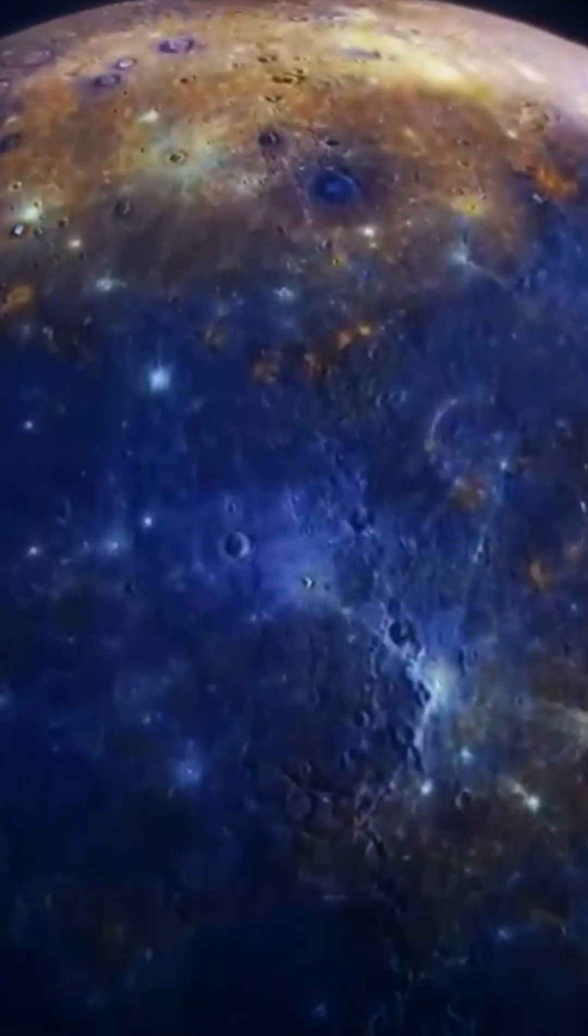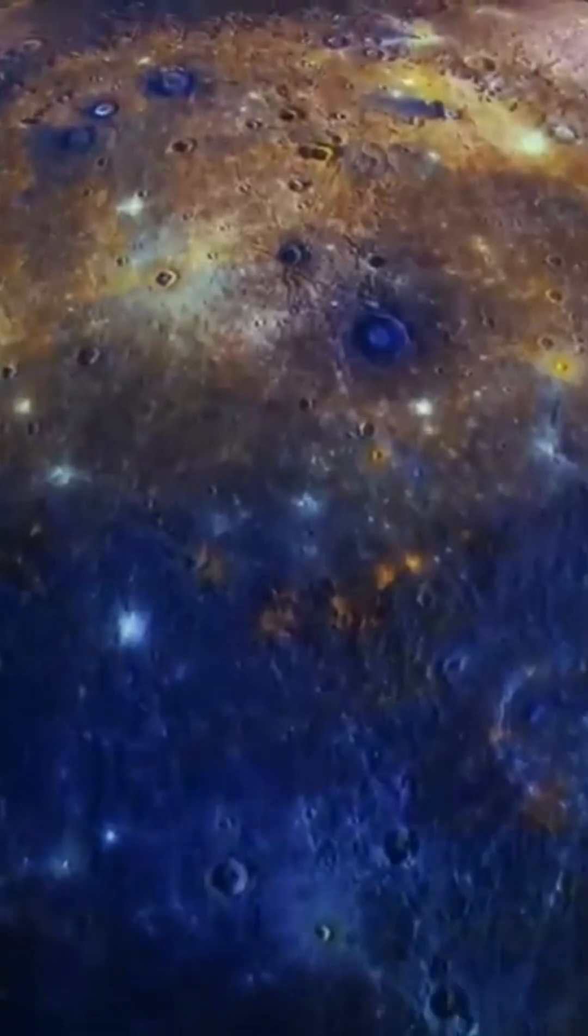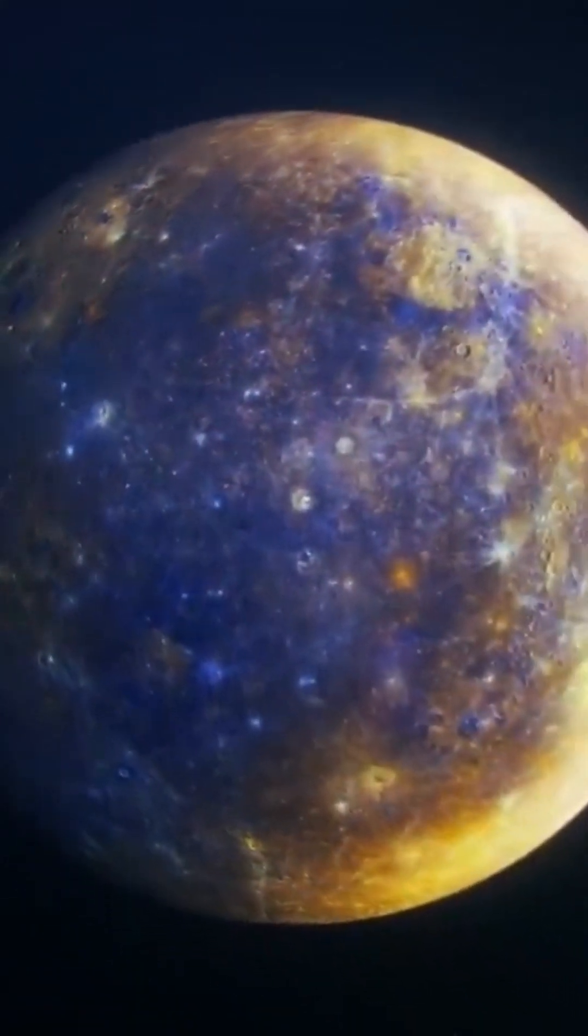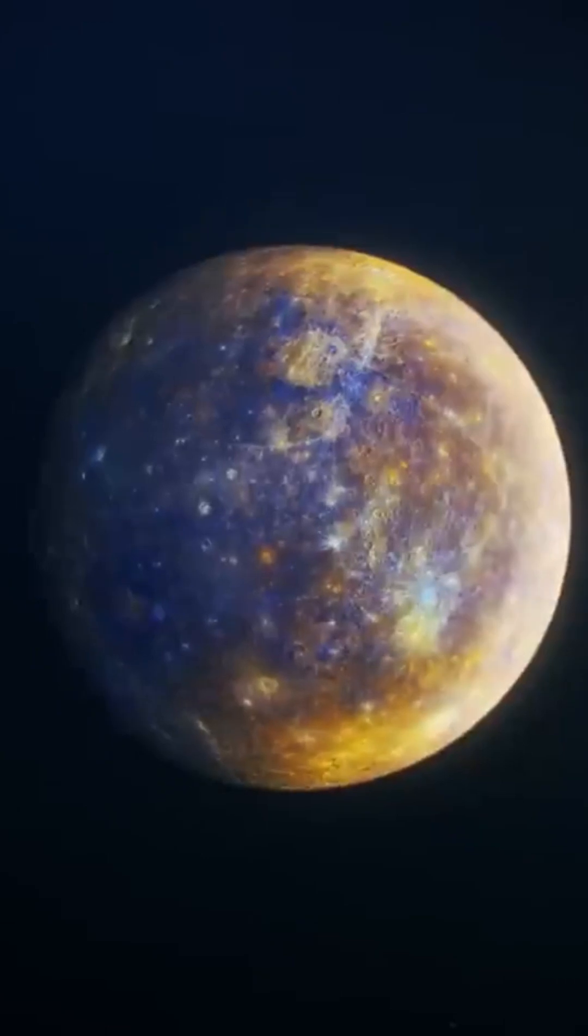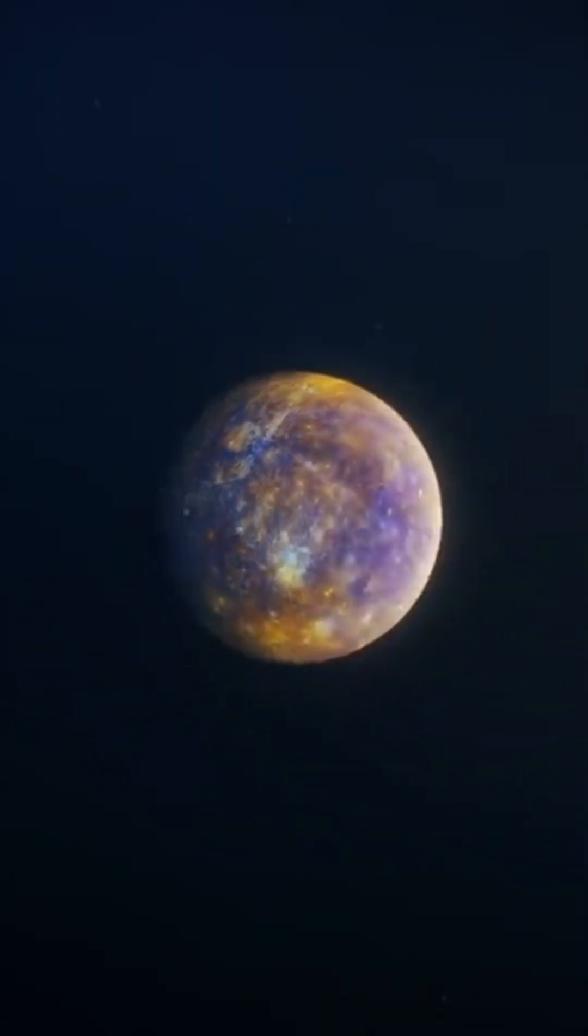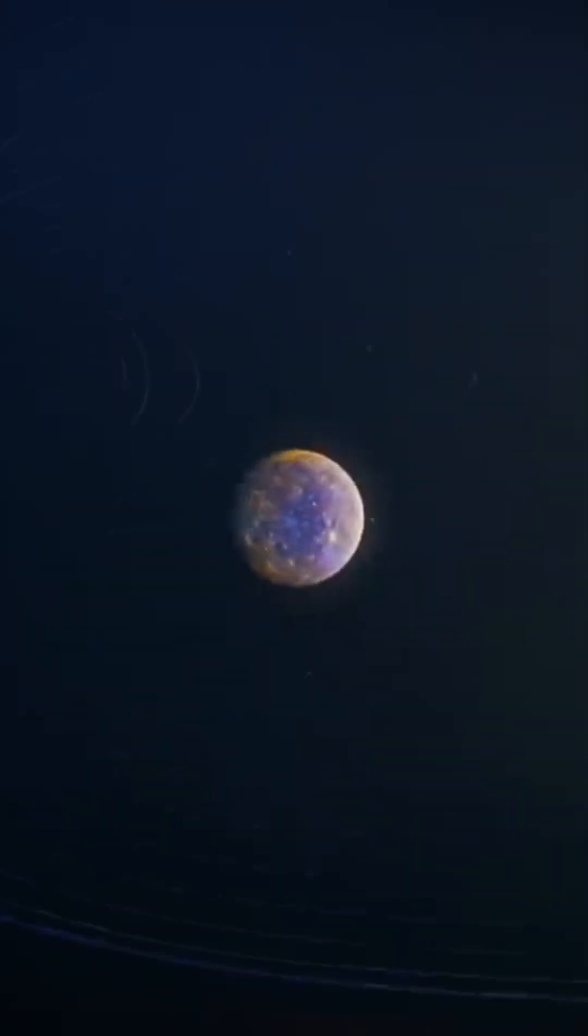This makes Mercury the second densest planet in the Solar System after the Earth. It is also the only telluric planet, along with our own, to have a magnetic...